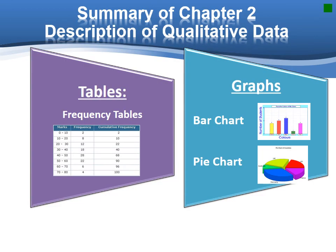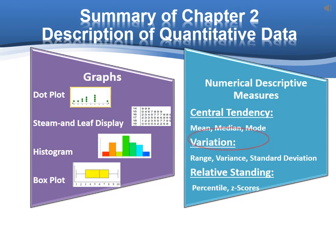Here is the summary of chapter 2. In chapter 2, we have learned how to use tables or graphs to describe the qualitative data. Also, we can describe the quantitative data by graphs or numerical measures. We have learned four graphs: dot plot, stem and leaf display, histogram, and box plot. For central tendency, we have learned mean, median, and mode. For variability, we have learned range, variance, and standard deviation. At the end, we learned percentile and how to detect the outliers using z-score. That is about chapter 2. Thank you.